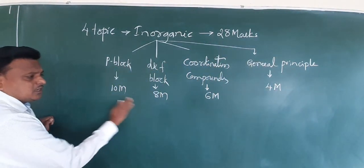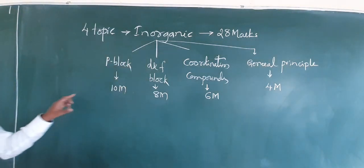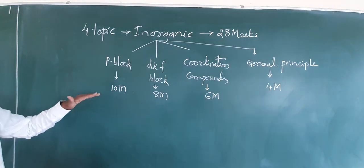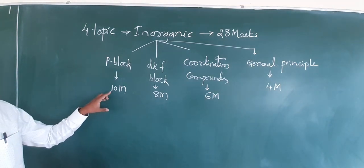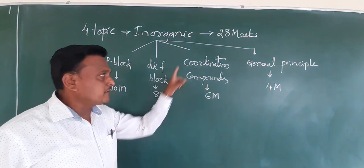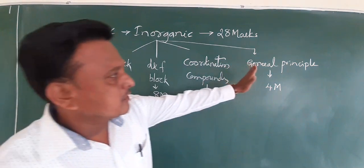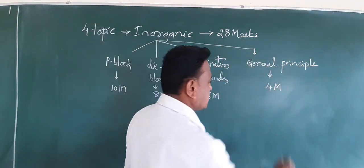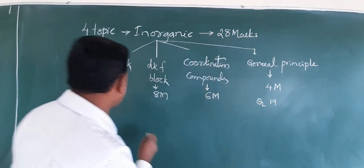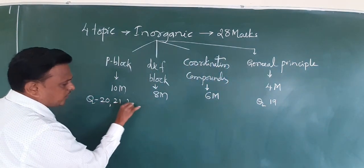The weightage of inorganic chemistry questions: in Part C there are totally 5 questions asked out of 8 questions — 3 from P block, 2 from D and F, 2 from coordination compounds, and 1 from general principle. The first question is question number 19, then question numbers 20, 21, and 22.